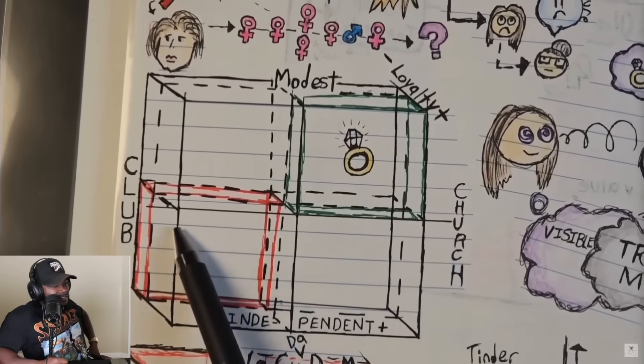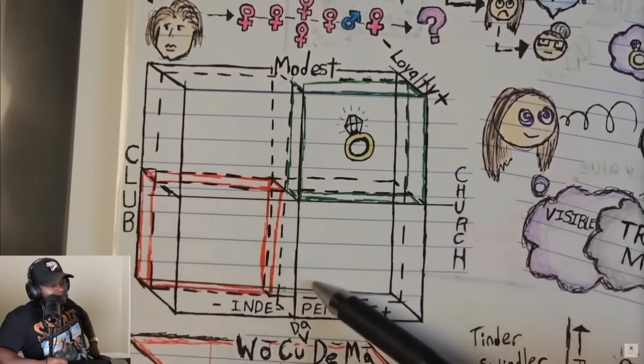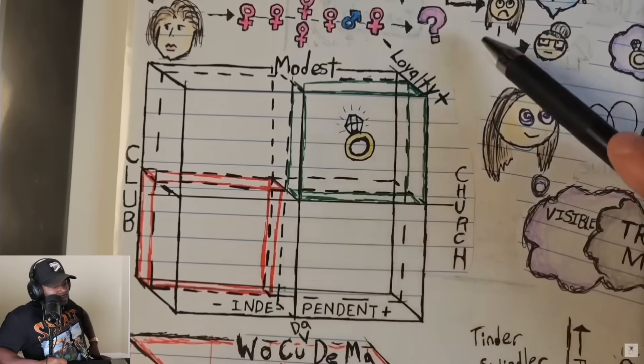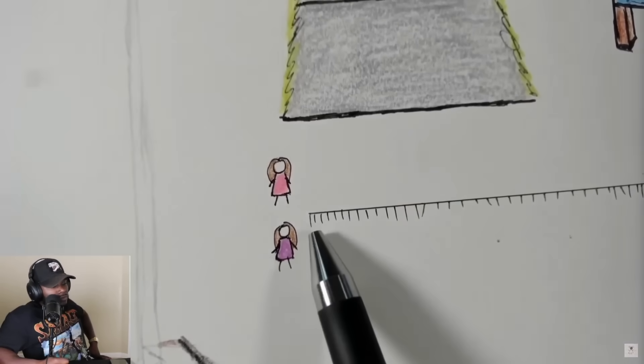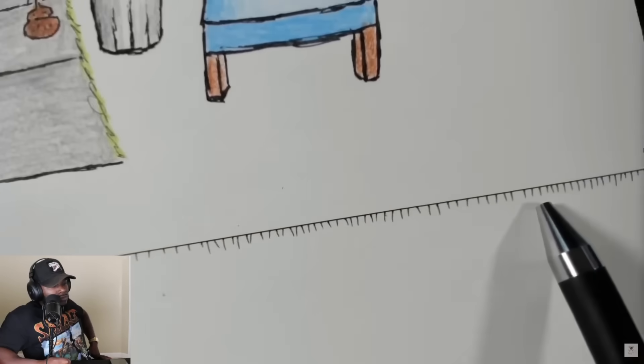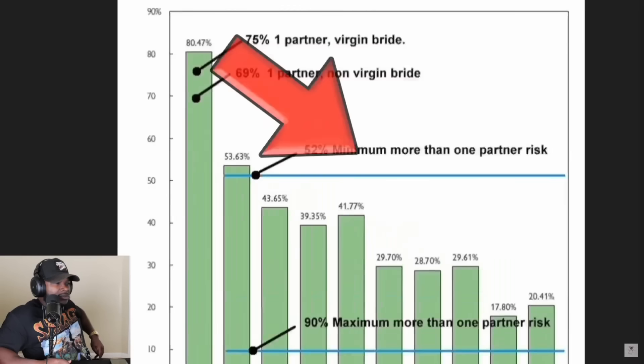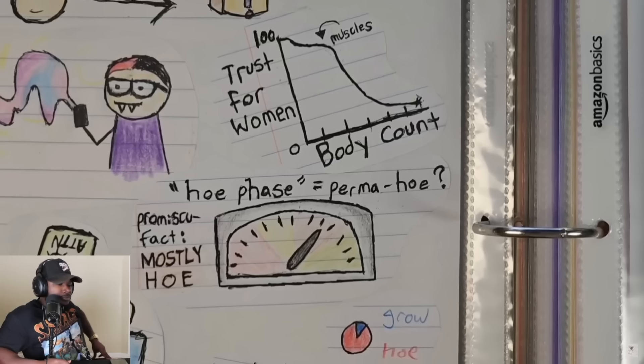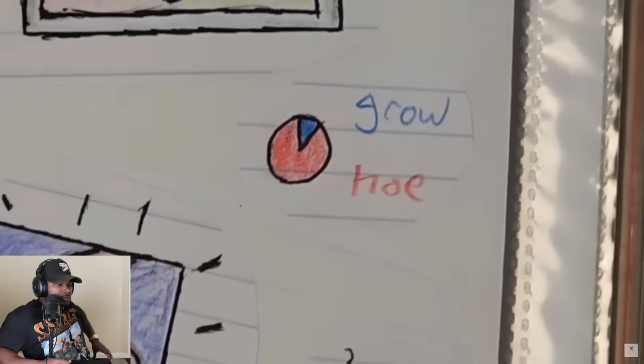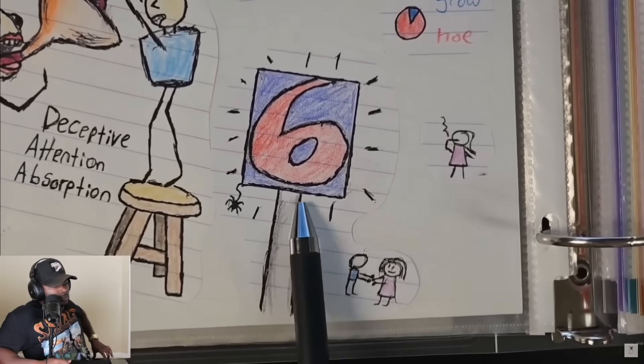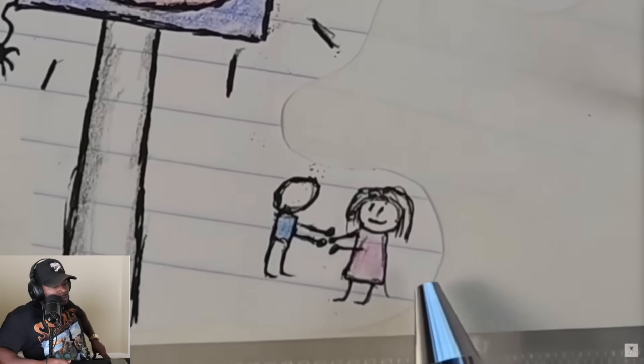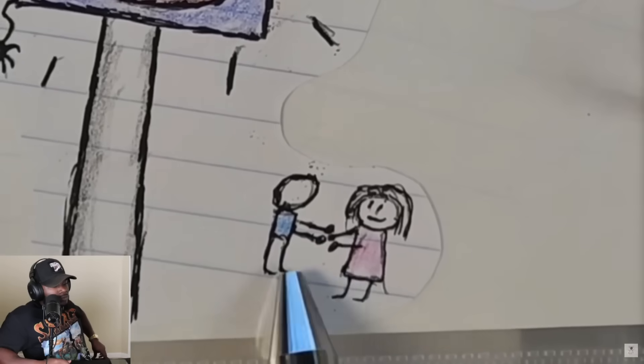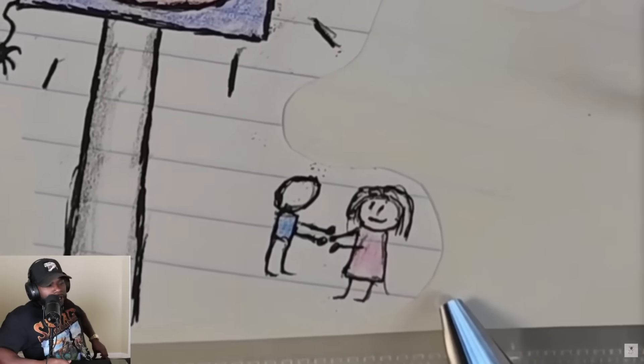So how do we know who the cheaters are? We have to observe your behavior. This is the behavior cube. This is the church club axis, that's where you choose to spend your time. This is the modest independent axis, that's how you present yourself to the world. And this is the loyalty axis, that's how you've behaved towards men in the past. Number of guys is a big sign. The more you have, the dumber it is to trust you. Not everyone with a high body count will cheat, but more of them will. You can see here that marriage gets less stable as body count goes up.